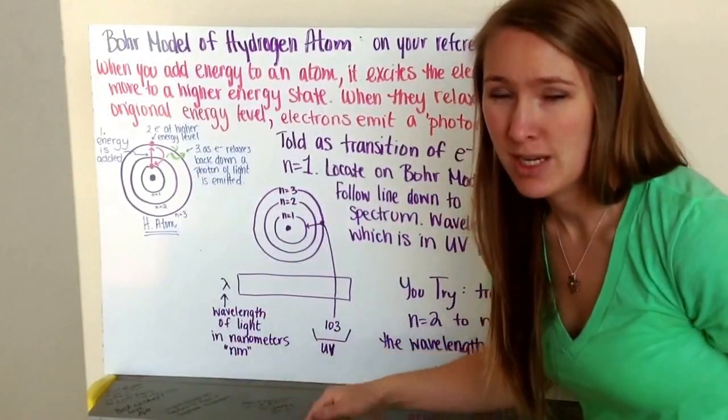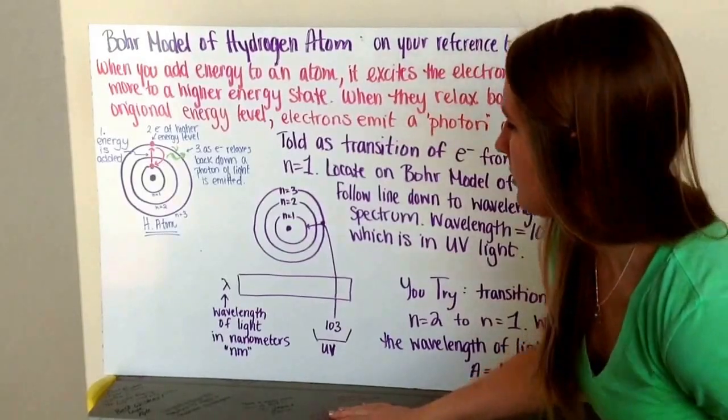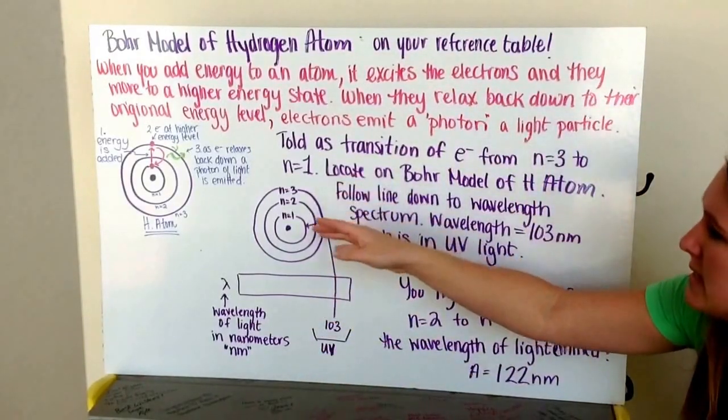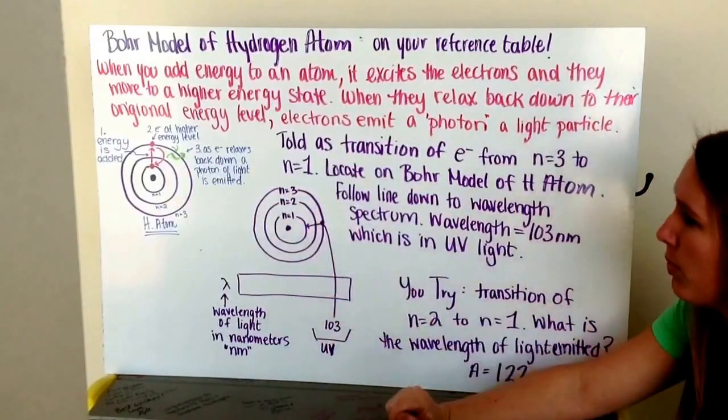And depending on what the transformation is, it emits a different wavelength of light. So, this is stated, what's shown here, is shown here as well on your Bohr model.